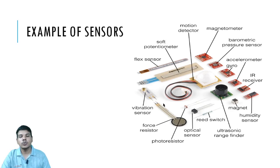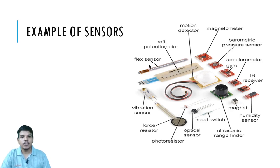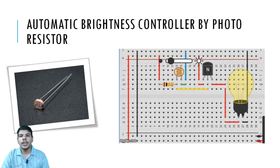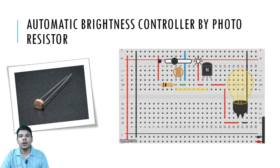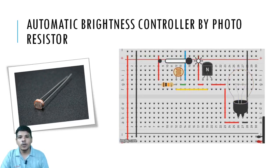There are many types of sensors used in electronics, and we will use some in further projects — such as motion detector, magnetometer, barometric pressure sensor, accelerometer, gyroscope, IR sensor, humidity sensor, magnet reed switch, force resistor, flag sensor, and photo resistor. We will use the photo resistor to understand how the sensor and actuator analogy works, by building an automatic brightness controller project simulated on Tinkercad.